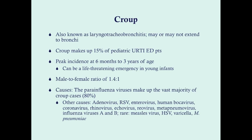Croup makes up about 15% of pediatric upper respiratory tract emergency visits. The peak incidence is about six months to three years of age, though it can occur outside that range. In very young infants, this can be a life-threatening emergency because they have a much smaller lumen, trachea, and larynx — so any infection in that area drastically increases resistance and can lead to respiratory distress. There is a slight male preponderance at about 1.4 to 1.